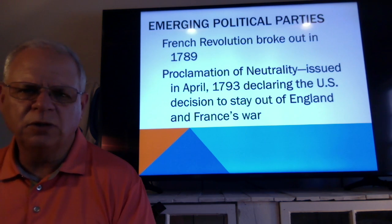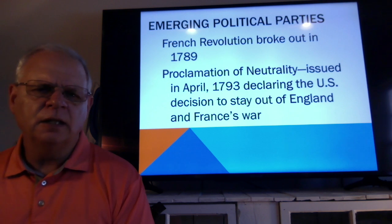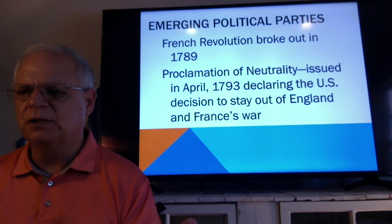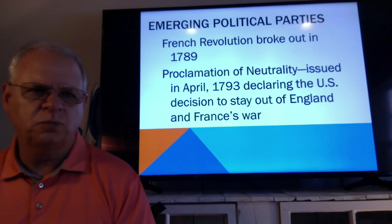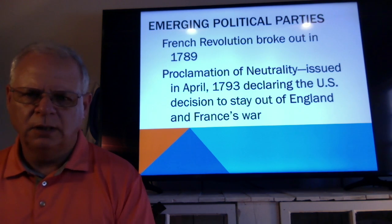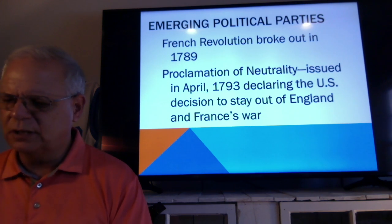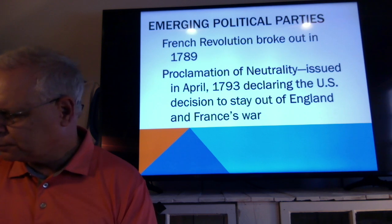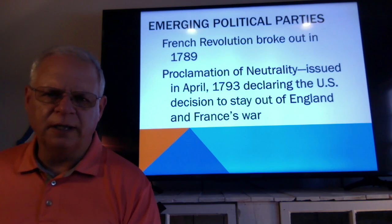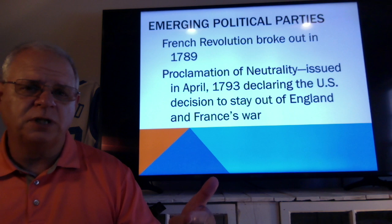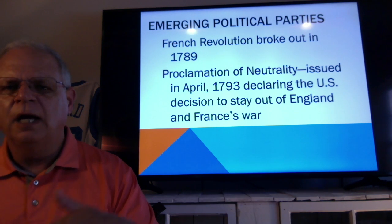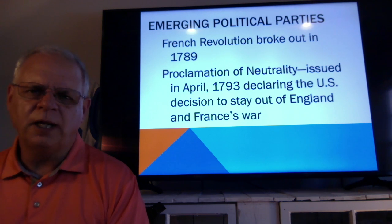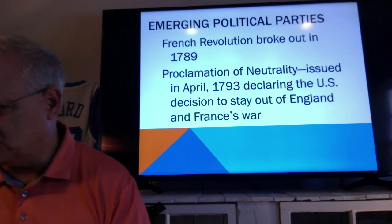Within just a few short years, England and France were at it again — fighting. We were trying to conduct business with both sides; we were a new country and just wanted to trade. We were getting pulled into this conflict and didn't want to be. France looked at us saying: we were on your side against England, you should be on our side. Ultimately in 1793, Washington issued the Proclamation of Neutrality — we would stay out of England and France's war.